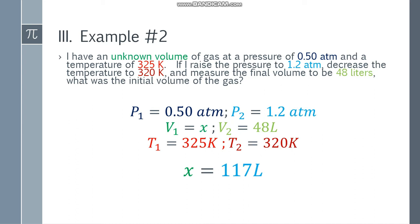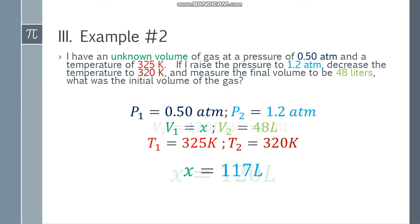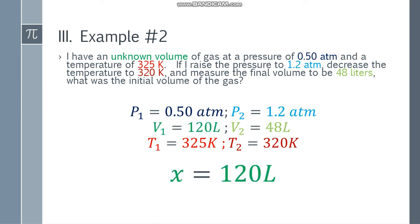Is this the final answer? Let's check the least number of sig figs. 0.50 has 2 sig figs, 1.2 has 2 sig figs, 48 liters has 2 sig figs, 325 K has 3 sig figs, and 320 has 3. So we take 2 sig figs. Count 1, 2 — cut. Since this digit is 7, round it up. The final answer is 120 liters. The initial volume of the gas is 120 liters.